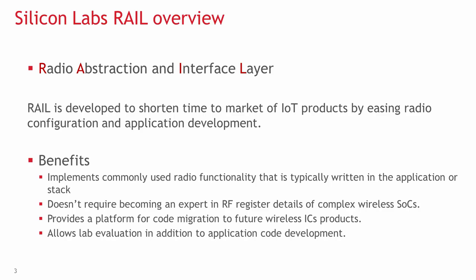RAIL provides an intuitive, easily customizable radio interface layer that is designed to support proprietary or standards-based wireless protocols. The primary benefits of RAIL are: it implements commonly used radio functionality typically written in the application or stack, does not require becoming an expert in RF-register details of complex wireless SOCs, and provides a platform for code migration to future wireless IC products, as well as allowing lab evaluation in addition to application code development.